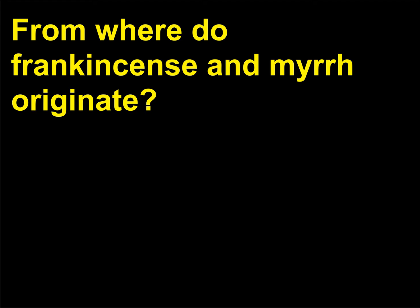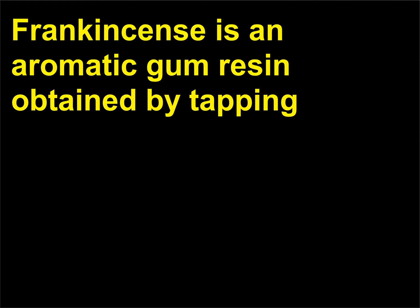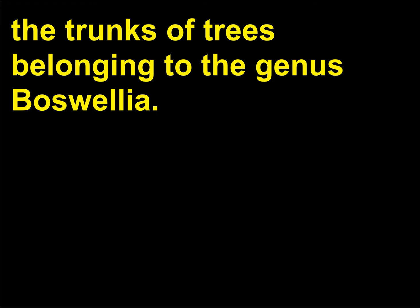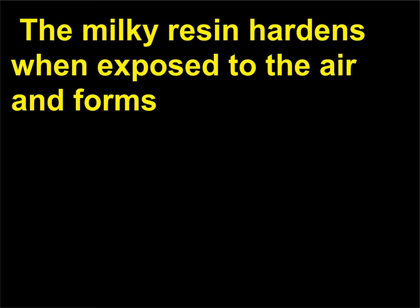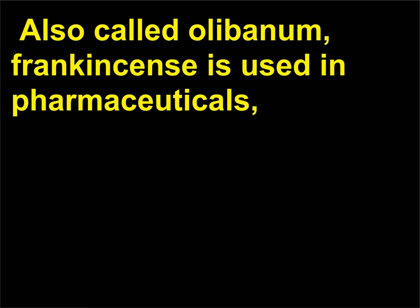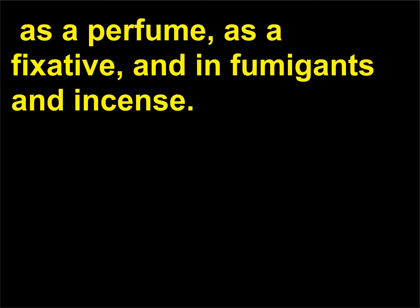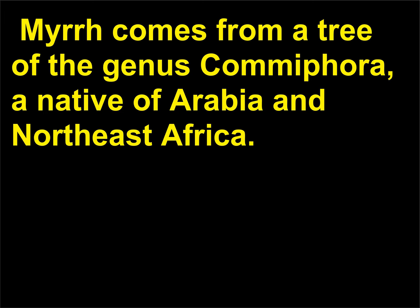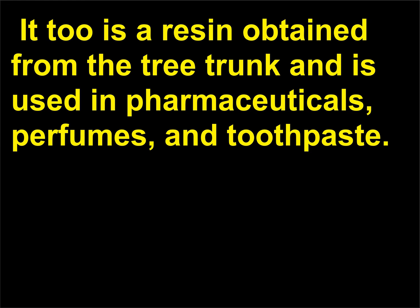From where do frankincense and myrrh originate? Frankincense is an aromatic gum resin obtained by tapping the trunks of trees belonging to the genus Boswellia. The milky resin hardens when exposed to the air, forming irregular lumps — the form in which it is usually marketed. Also called olibanum, frankincense is used in pharmaceuticals, as a perfume, as a fixative, and in fumigants and incense. Myrrh comes from a tree of the genus Commiphora, native to Arabia and Northeast Africa. It too is a resin obtained from the tree trunk and is used in pharmaceuticals, perfumes, and toothpaste.